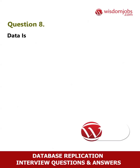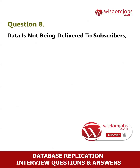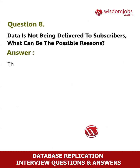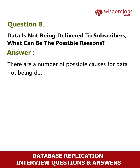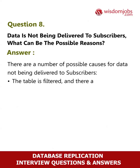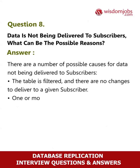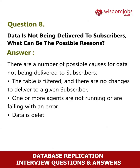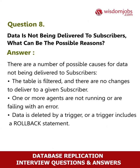Question 8: Data is not being delivered to subscribers. What can be the possible reasons? There are a number of possible causes. The table is filtered and there are no changes to deliver to a given subscriber. One or more agents are not running or are failing with an error. Data is deleted by a trigger, or a trigger includes a rollback statement.